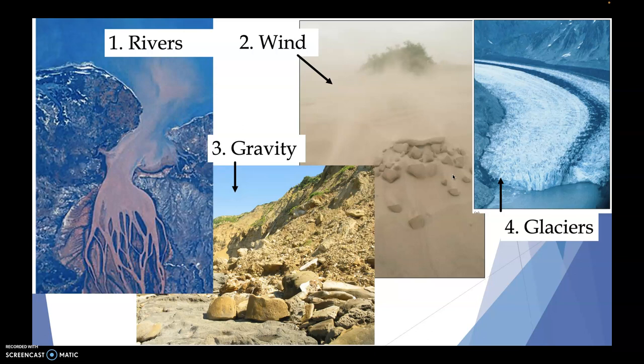One would be from rivers. We've seen a couple of examples already this semester of rivers flowing into an area, into the oceans, and we can literally see a browner, murkier color as opposed to out in the open ocean.